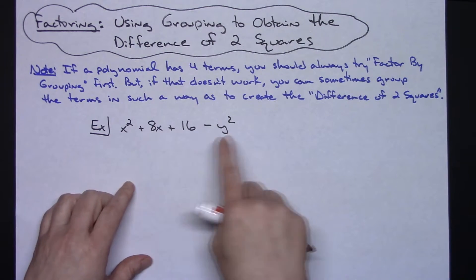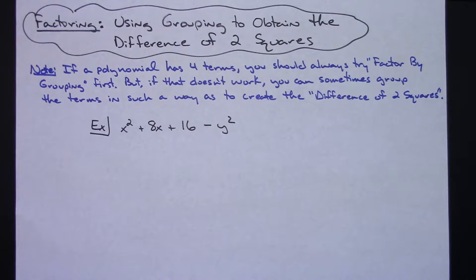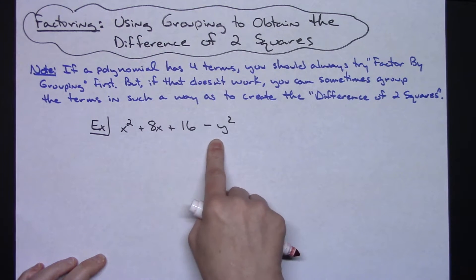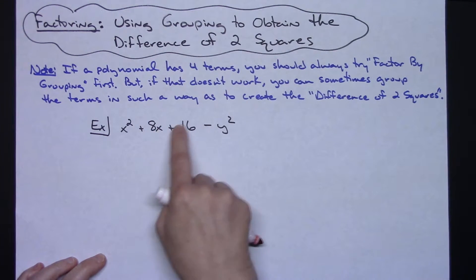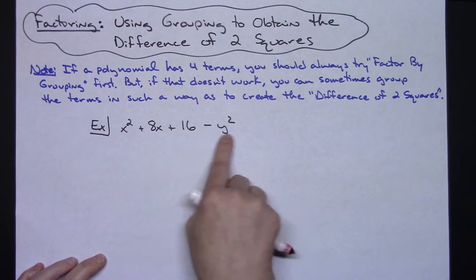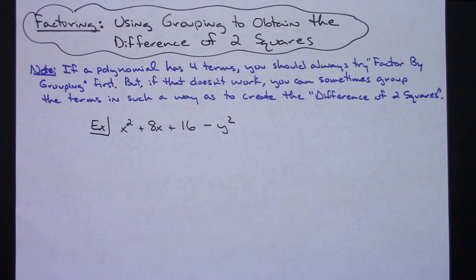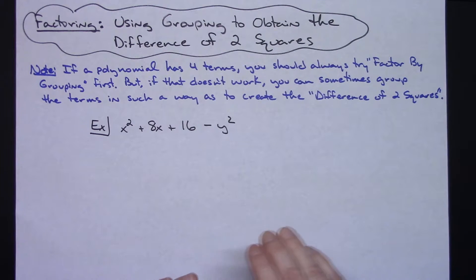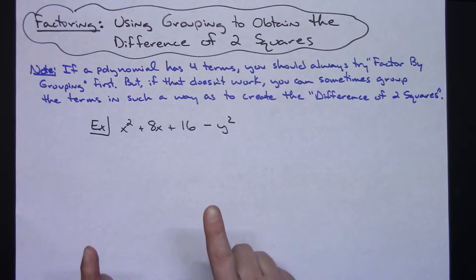However if you cannot do factor by grouping — you group the terms together and cannot get any matching binomial terms — then you need another strategy. Forcing a difference of two squares sometimes works depending on how the problem is originally written. In this first example I've got x squared plus 8x plus 16 minus y squared. If I try the traditional factor by grouping I am not going to get a matching binomial term. So what I'm going to look for is a perfect square trinomial, and if I can see one combined with a difference of two squares, I may still be able to factor this.